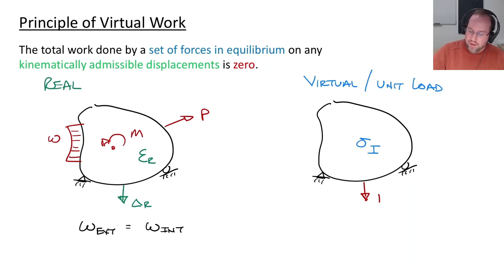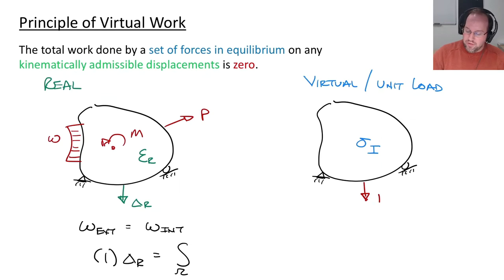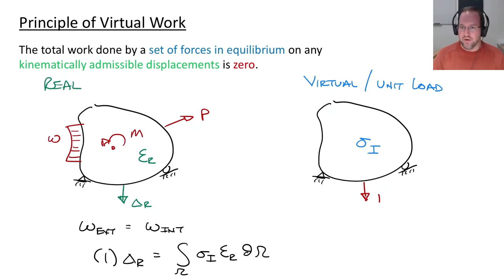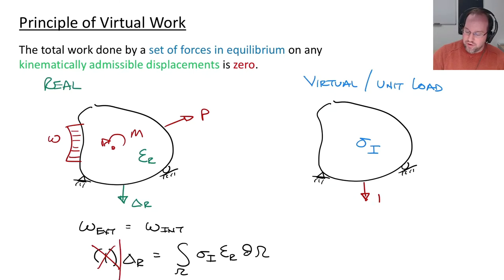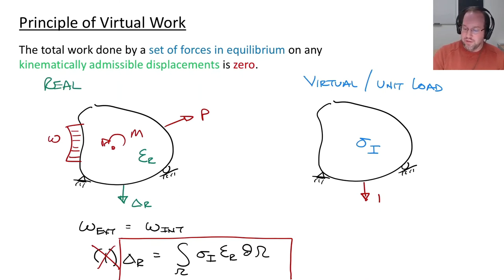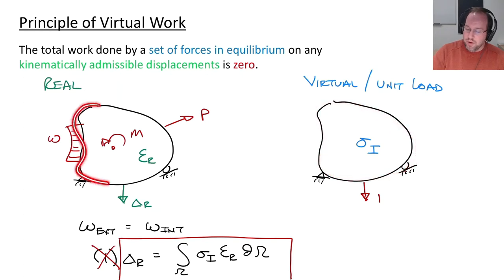The external work is the unit force of one multiplied by the real displacement δᵣ. The internal work is the strain energy integrated over the entire volume, where I multiply the stresses from the virtual system by the strains from the real system. Since the external force is one, it cancels out, leaving an expression for the displacement at the location of the unit load: the real displacement equals the integral of virtual stresses times real strains over the volume.